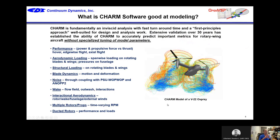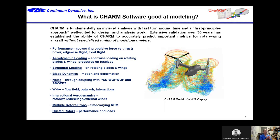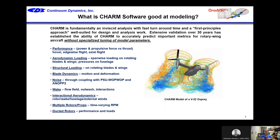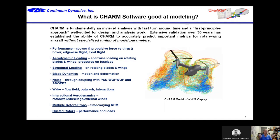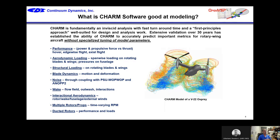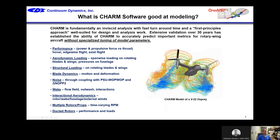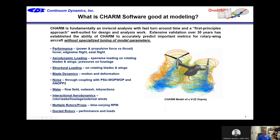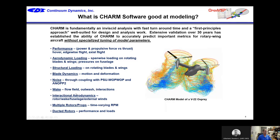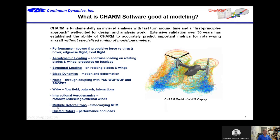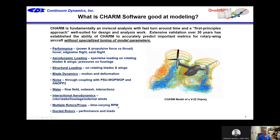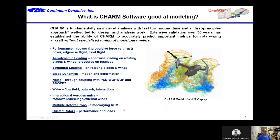So what is CHARM software good at modeling? It's fundamentally inviscid, but we've got extensive validation over 30 years of how to add in viscous effects — particularly the airfoils on the blade, stalling characteristics, and fuselage modeling. The things it's good at modeling include: performance, aerodynamic loading, structural loading, blade dynamics, motion and deformation, noise, the wake flow field, interactional aerodynamics — which are even more crucial for eVTOL aircraft — multiple rotors with time-varying RPM, and ducted rotors using the panel method.